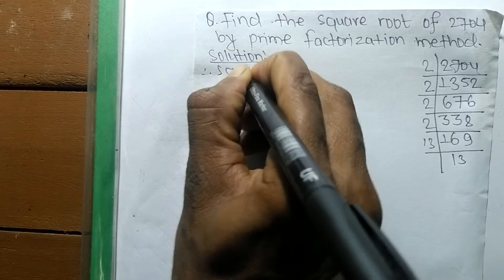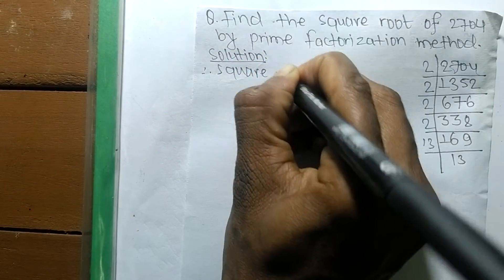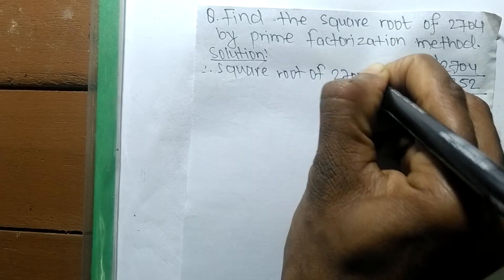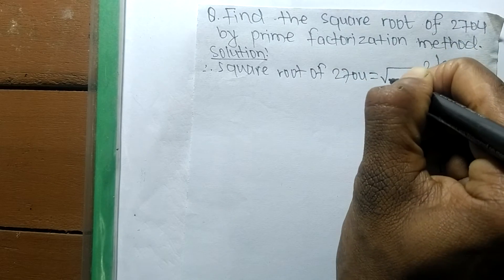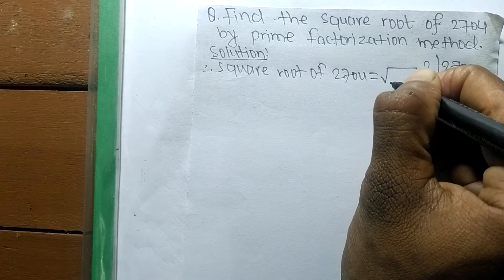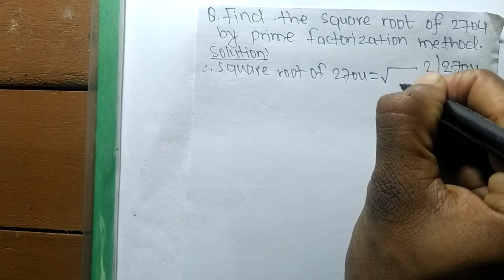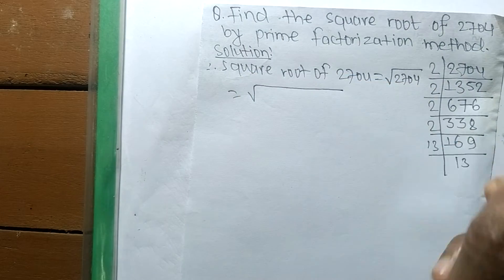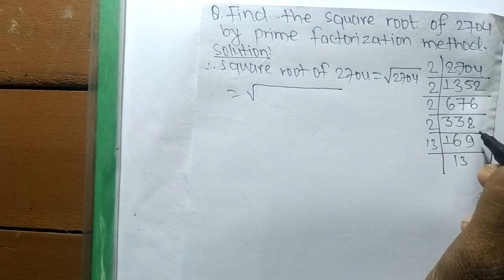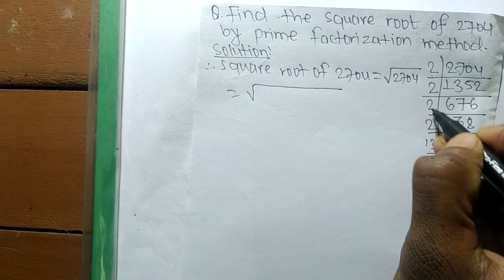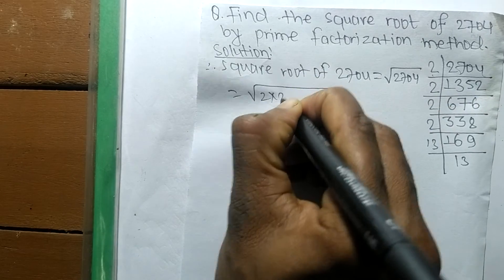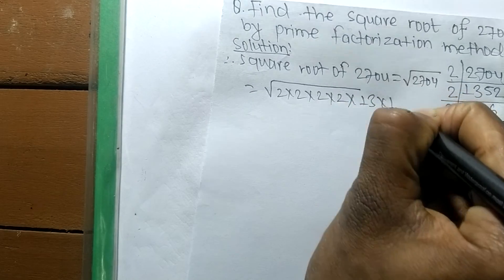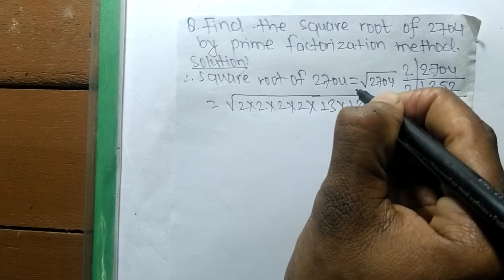The square root of 2704 equals - this sign is the square root symbol - and we're finding the square root of 2704. Now we write the prime factors: 2 times 2 times 2 times 2 times 2 times 2 times 13 times 13.